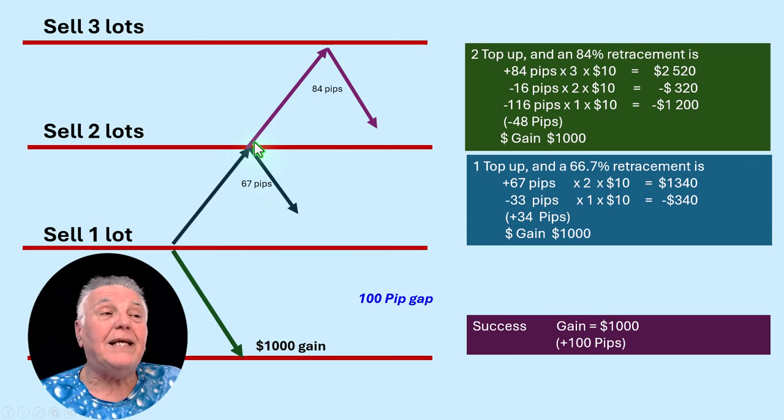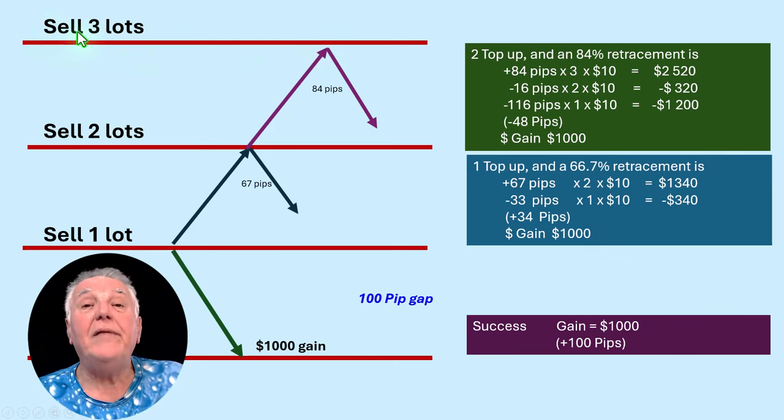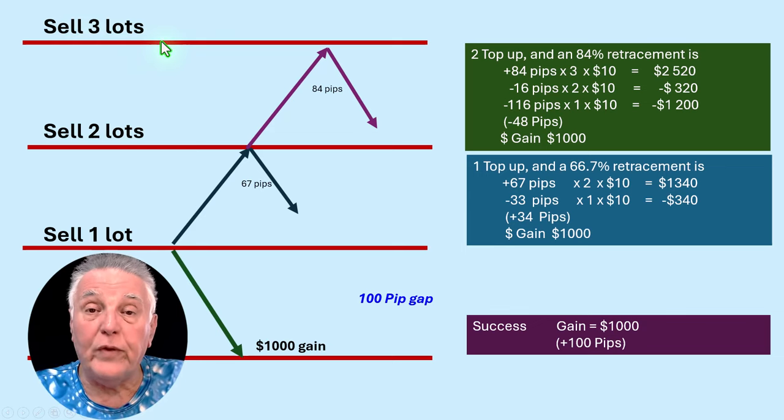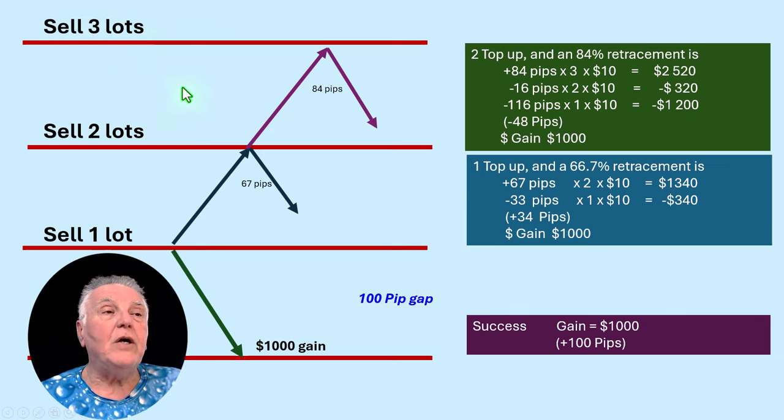Okay, so let's take the next step. Let's say the price went up to that point and then instead of retracing it went up even further to another 100 pips, and the trader decided to enter another sell.